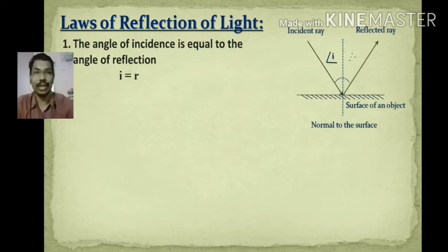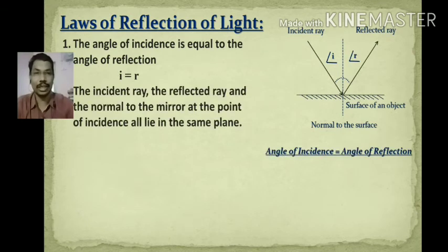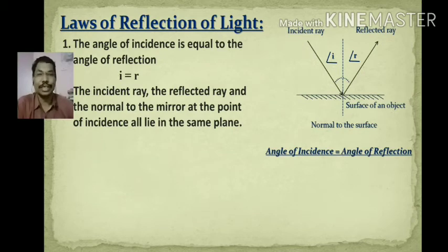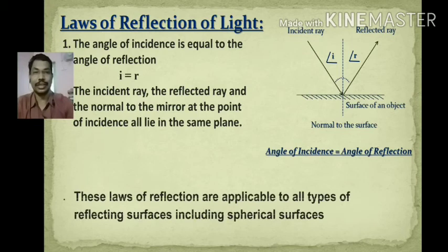The angle of incidence is always equal to the angle of reflection — that is the first law of reflection. The second law states that the incident ray, the reflected ray, and the normal to the mirror at the point of incidence all lie in the same plane. This is called the second law of reflection.